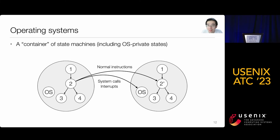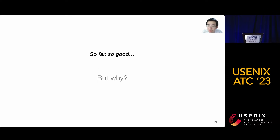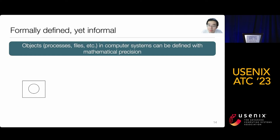Operating systems are containers of programs, or state machines. These programs on the processor either progress by executing a user-level instruction, or they trap into the operating system — which is also a state machine — through interrupts and system calls. Why even bother with state machines? Because state machines are mathematically rigorous objects, defined as a five-tuple consisting of states, an alphabet, initial and final states, and a transition function. We emphasize that such a definition does exist, and everything in the computer system should be treated with the same precision as a mathematical object. This gives some refreshing ideas in how to teach operating systems.